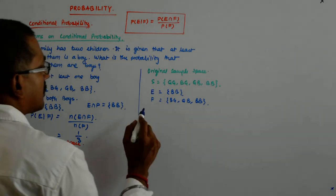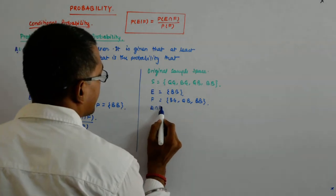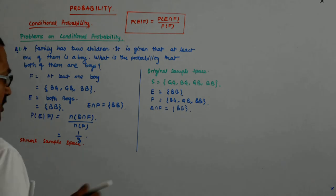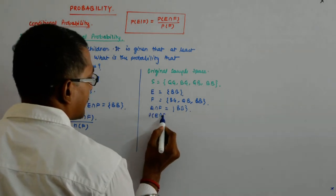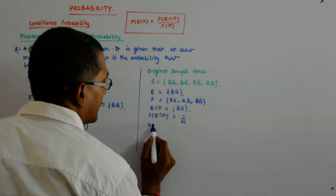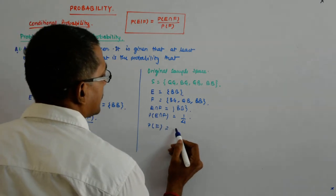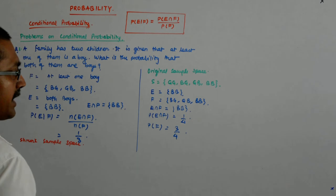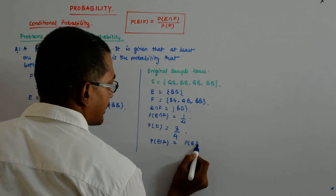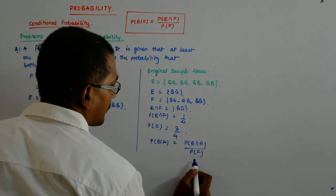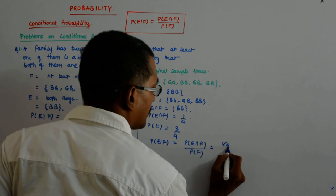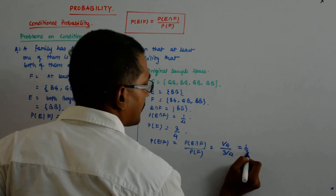Now you find out their probability. E intersection F is B, B. What is the probability of E intersection F? That is 1 upon 4. What is the probability of F? It is 3 by 4. So you will get probability of E such that F is equal to probability of E intersection F upon probability of F. So that is 1 by 4 divided by 3 by 4 which is 1 by 3.